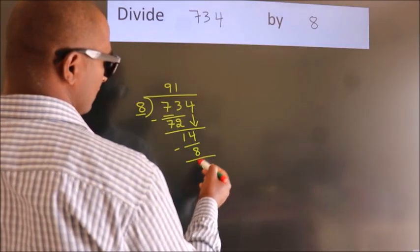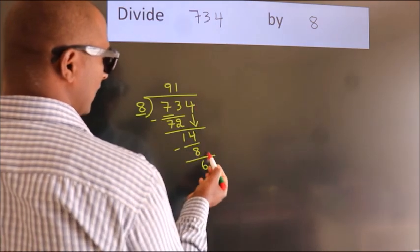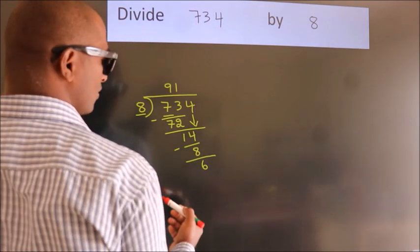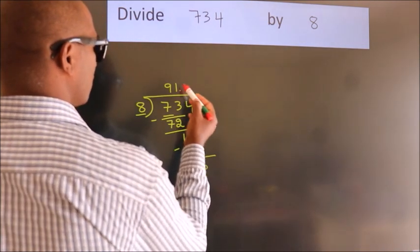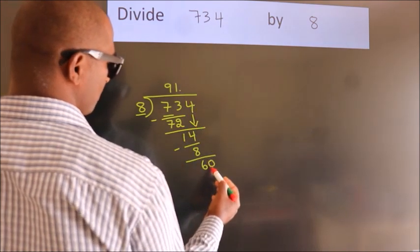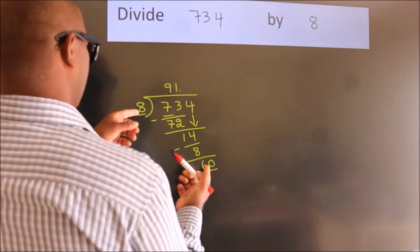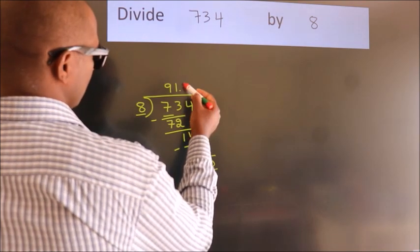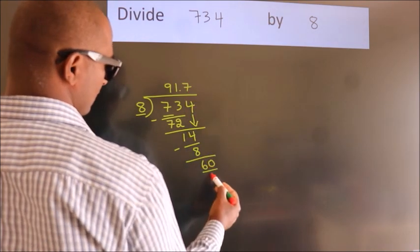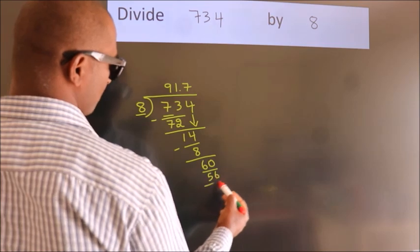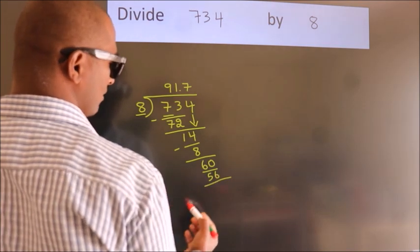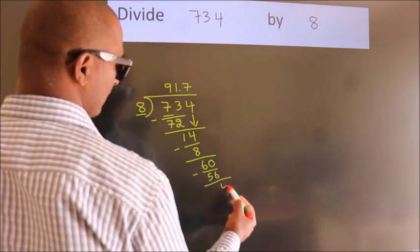After this, no more numbers to bring it down. So what we do is, we put dot take 0. So 60. A number close to 60 in 8 table is 8 7s, 56. Now we subtract, we get 4.